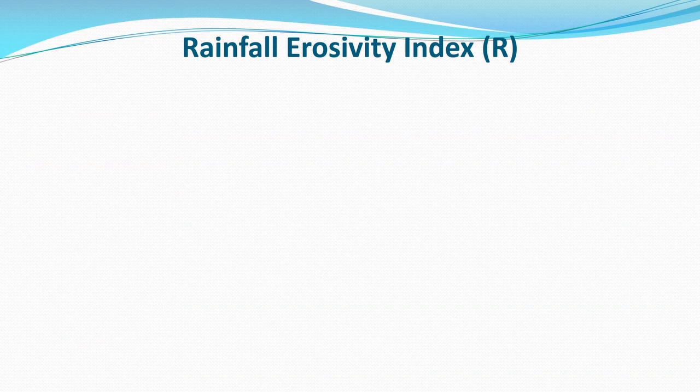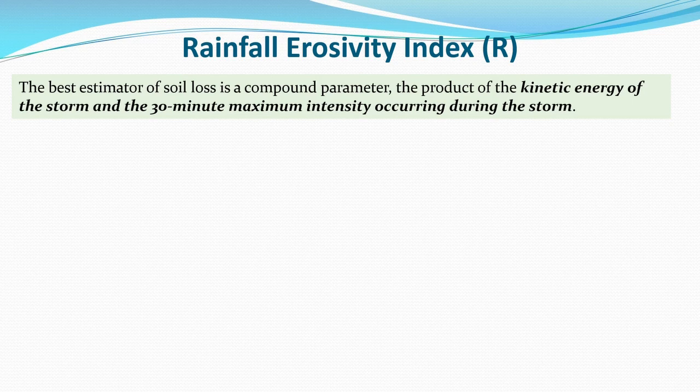Regarding the Rainfall Erosivity Index: the best estimator of soil loss is a compound parameter — the product of the kinetic energy of the storm and the 30-minute maximum intensity occurring during the storm. We multiply the kinetic energy of the storm by the 30-minute maximum intensity. That is the best estimator of soil loss, so we can use the EI₃₀ index method.